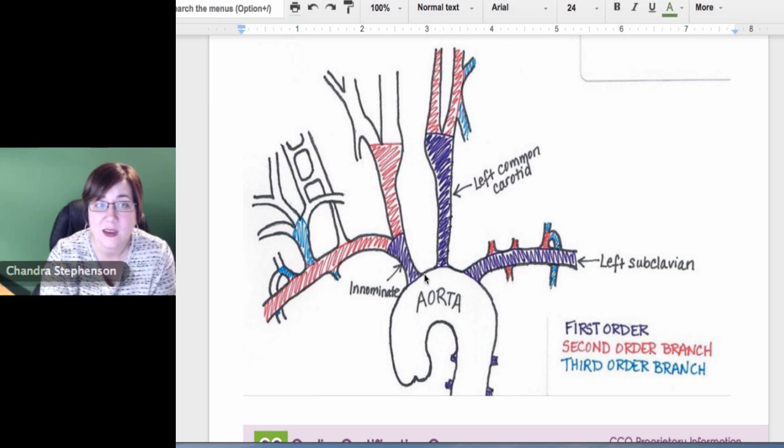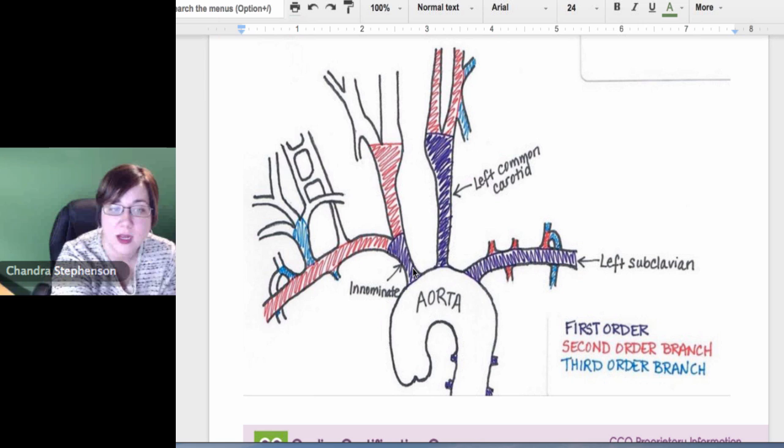As soon as they pick an exit, they pick one of those three main arteries to go into, they have branched off into that first road off the interstate. Think of that as your first order - those purples are all your first order. It's either the innominate, the left common carotid, or the left subclavian.